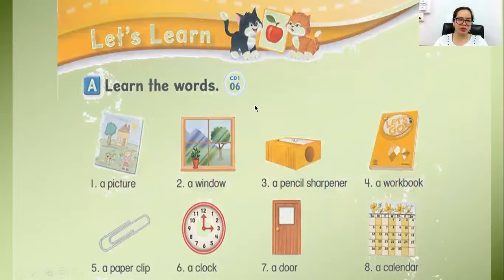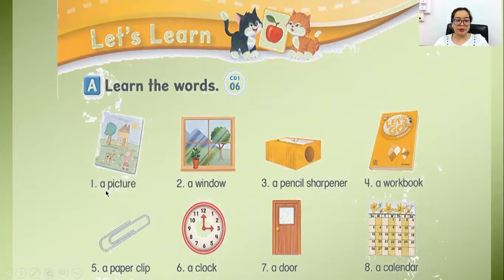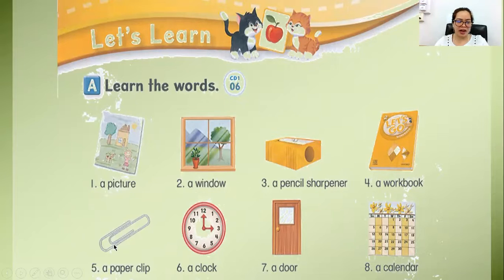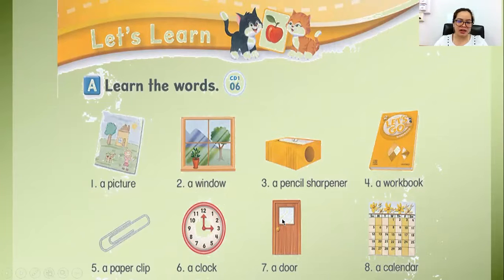On your student book you have this one — you can open it. Number one, a picture. Number two, a window. Number three, a pencil sharpener. Number four, a workbook. Number five, a paperclip. Number six, a clock. Number seven, a door. Number eight, a calendar.